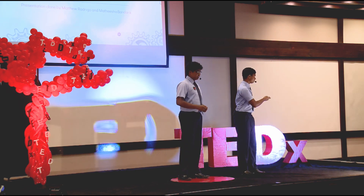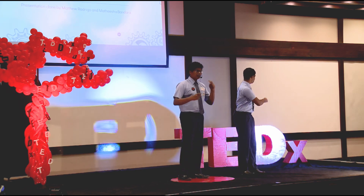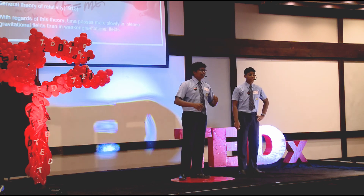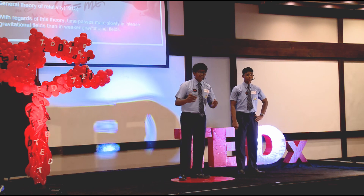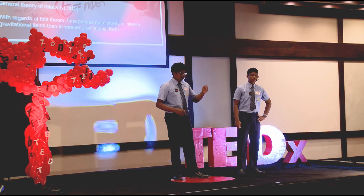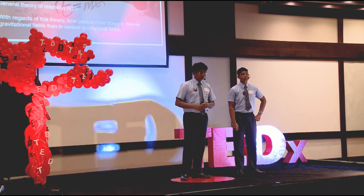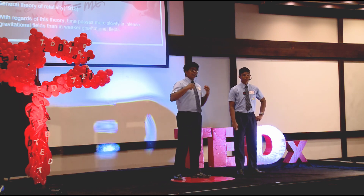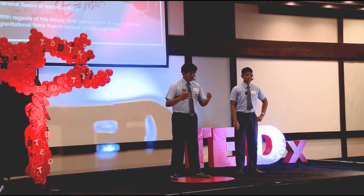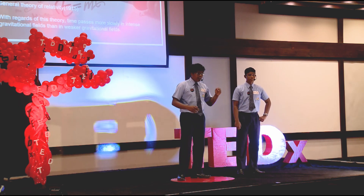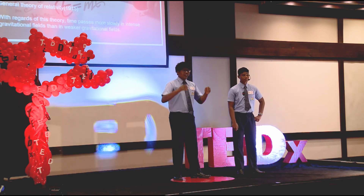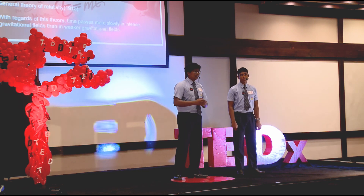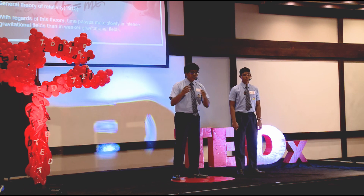The theory of relativity has two fundamental building blocks. The first is known as the special theory of relativity, while the second is the general theory of relativity. In 1905, he introduced the special theory of relativity, and the notion is basically that the laws of physics are the same for all observers, regardless of whether speeds may be high or low relative to each other.